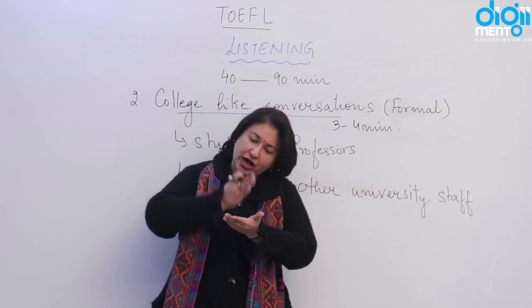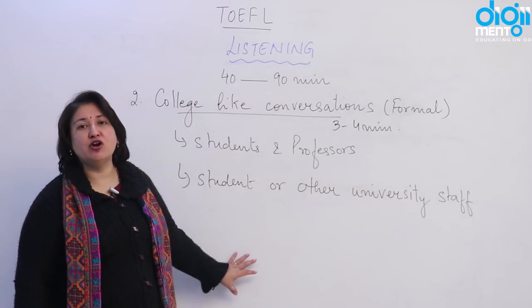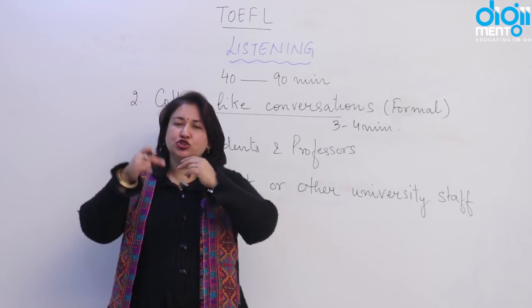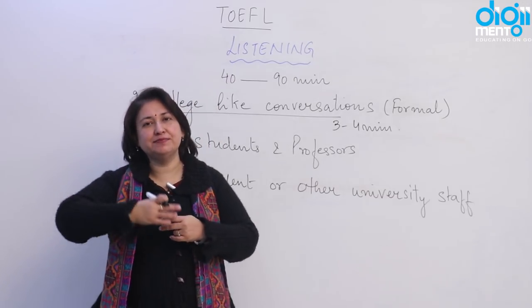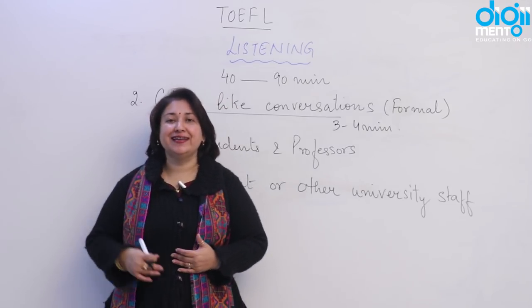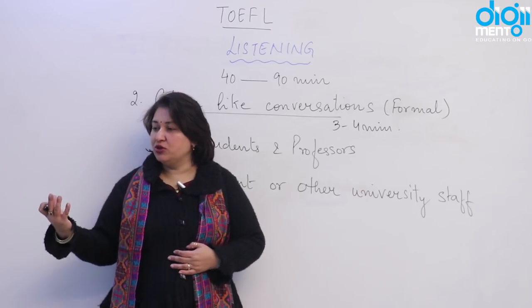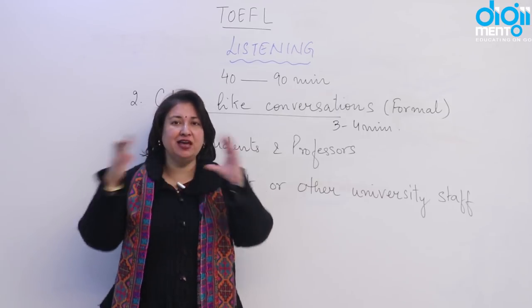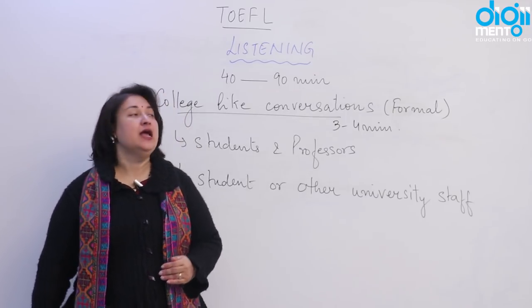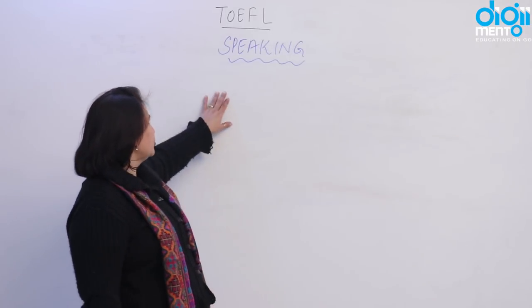The ratio of lectures to conversations depends on the total number of listening passages — for example, if there are six passages, four will be lectures and two conversations; if seven, it could be four and three. It is not fixed. Also, the passages are not necessarily all from the same field — just like reading, they can be from chemistry, science, physics, biology, humanities, or history. The only common factor is that all passages are academic.